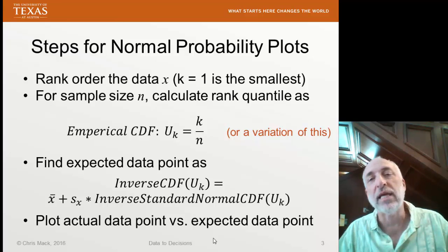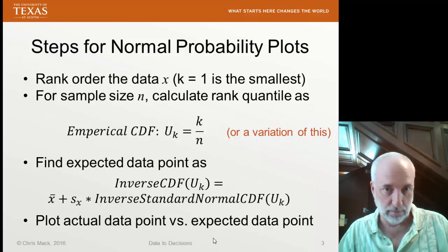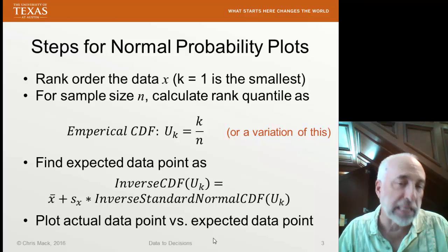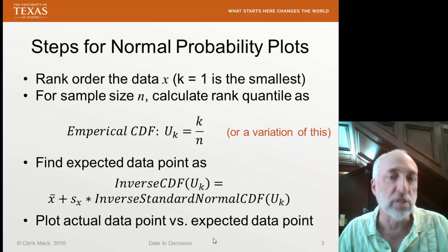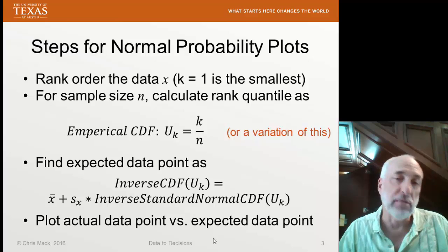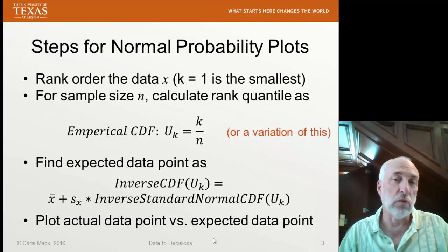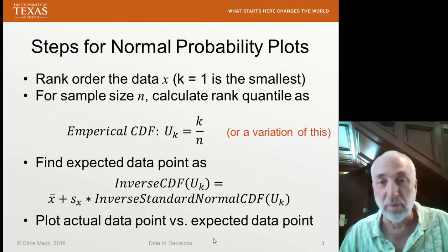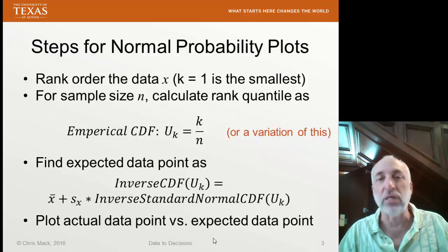Then we'll calculate what's called the rank quantile. It's essentially the empirical cumulative distribution function. And it's something like k over n. We're going to find that there's some variations of this that are a little bit better than exactly k over n.